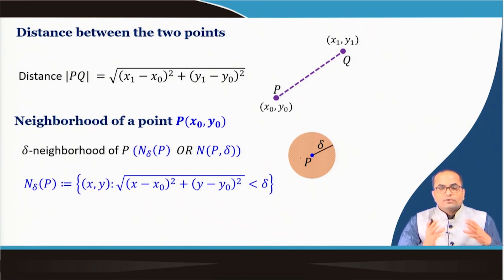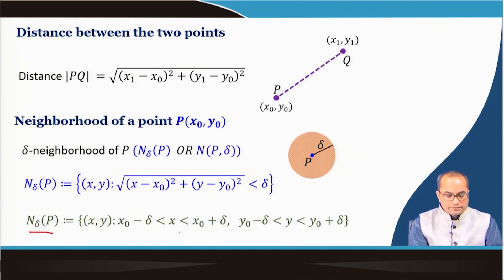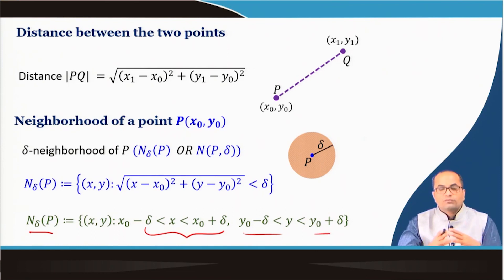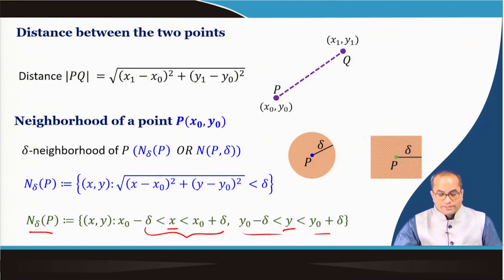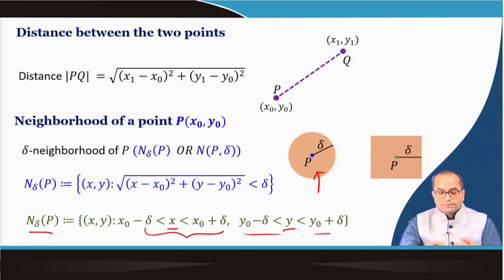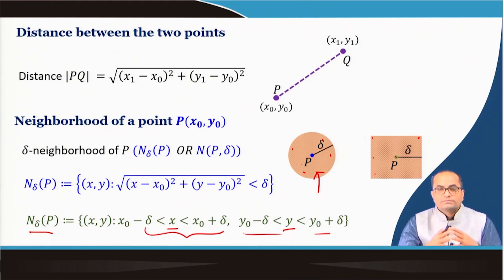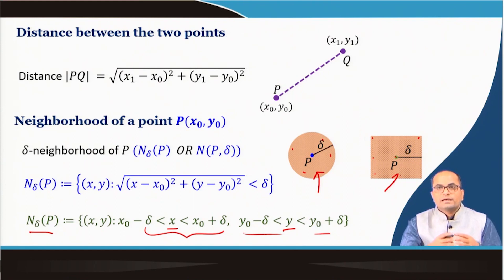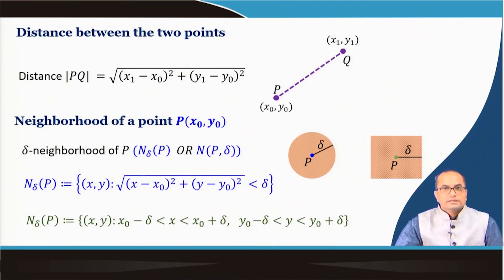It is not necessary to always use a circular neighborhood; we can also define a square region around (x₀, y₀) as the neighborhood. We take all points (x, y) belonging to this square neighborhood. Most frequently we use the circular neighborhood definition, which makes more sense because all points are at equal distance from p. In the square neighborhood, some points are farther than others. We usually use the concept of the circular neighborhood.